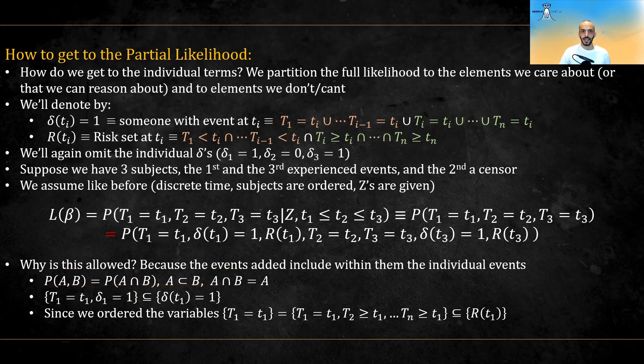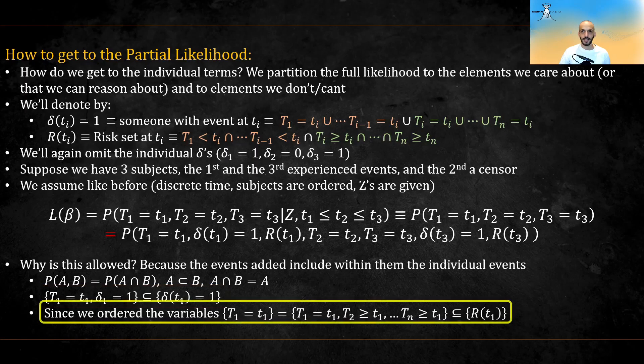And likewise, subject one at either an event or a censor at t1, if we order the variables, is equal to this, which is a subset of the risk set at t1.